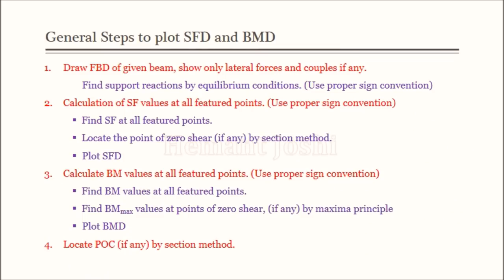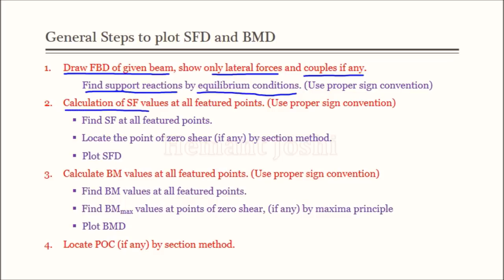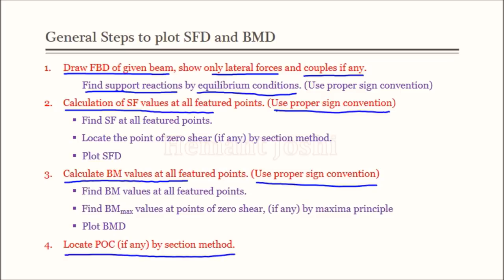Here are the general steps to plot SFD and BMD. Step 1: draw the free body diagram of the given beam and find support reactions using equilibrium conditions. Important note: we are interested only in lateral forces and couples, as these are the only elements causing shear and bending. Axial forces are not considered as they only cause elongation or contraction. Step 2: perform shear force calculations using proper sign convention. Step 3: calculate bending moment values at various feature points with proper sign convention. Step 4: locate the point of contraflexure if available in the bending moment diagram.